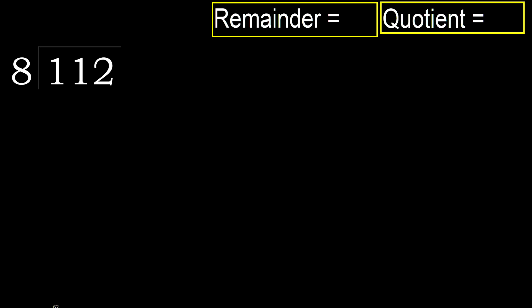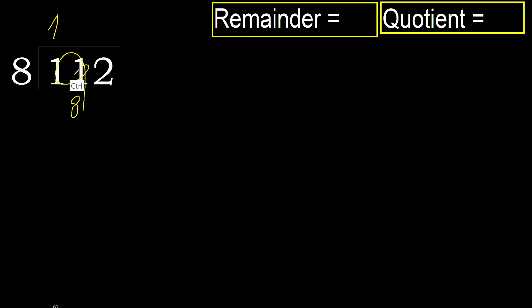112 divided by 8. 1 is less, therefore next. 11 is not less, therefore work with 11. 8 multiplied by which number is nearest to 11 but not greater? 8 multiplied by 2 is 16 — that is greater. Multiplied by 1: 8 is not greater. 11 minus 8 equals 3. Next.